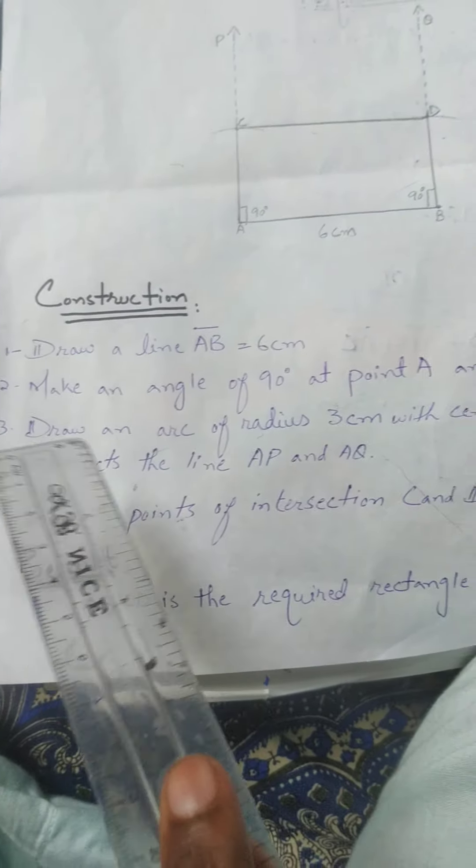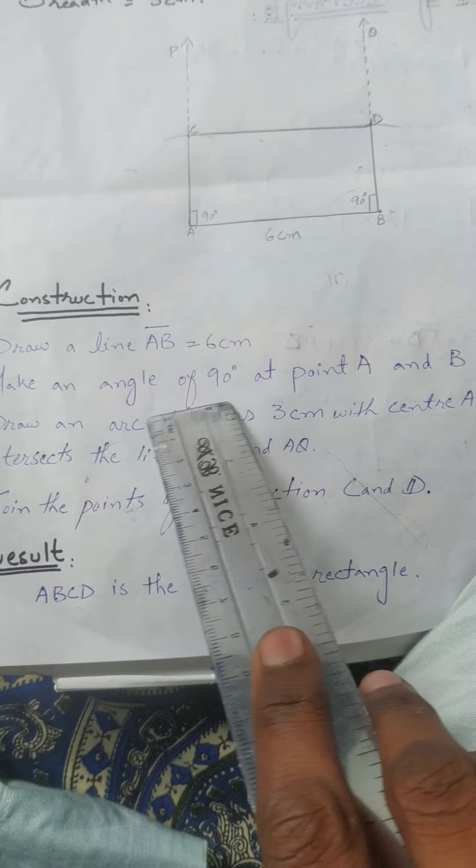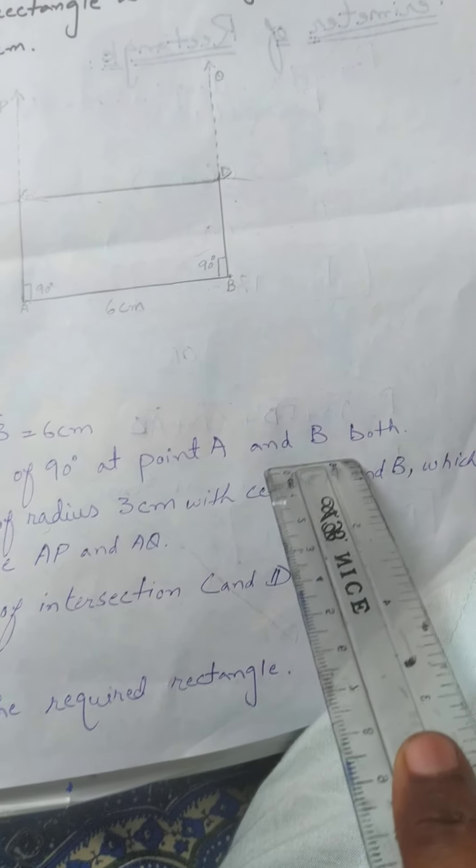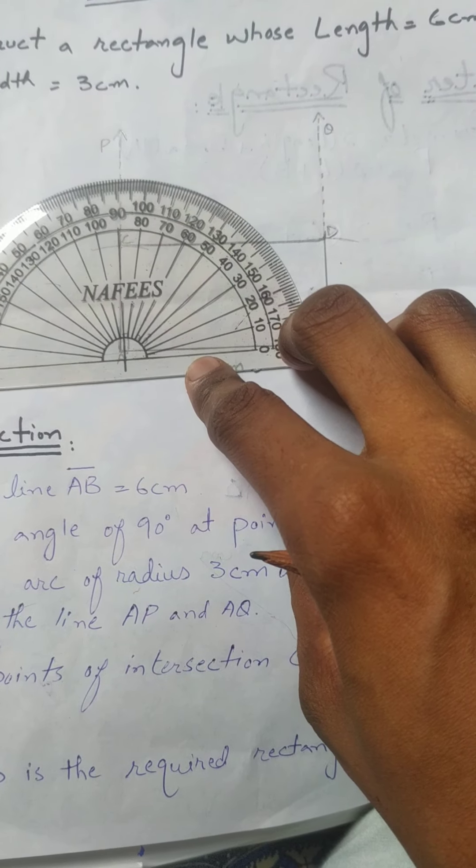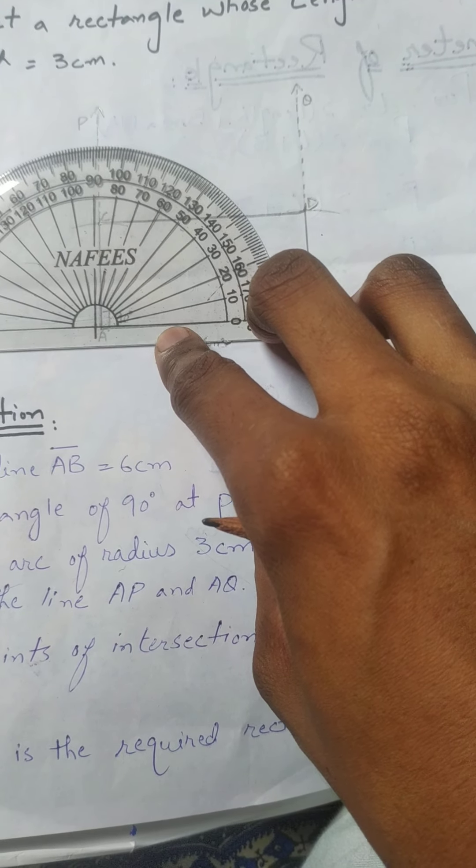After drawing the line, the second step is to make an angle of 90 degrees at points A and B both. We will make the angle with the help of a protractor.